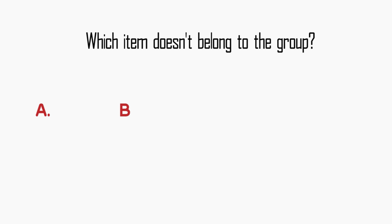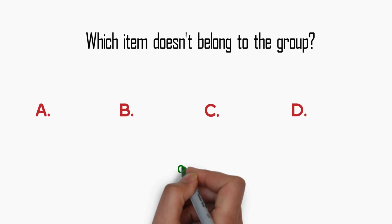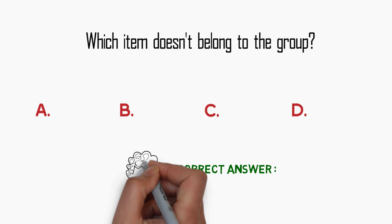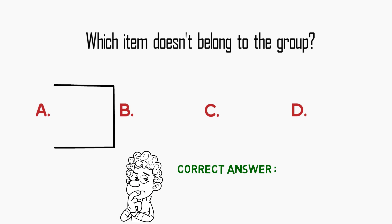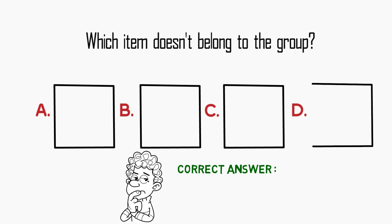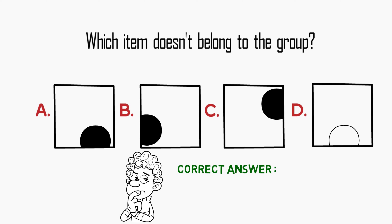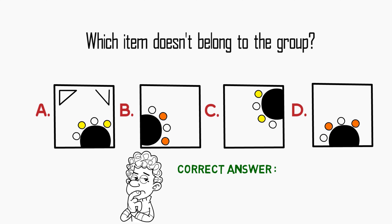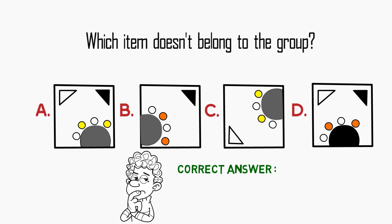There is always a pattern you need to detect to answer these types of questions correctly, and a lot of times there are items designed to confuse you. Let me first walk you through the distractors. You have small circles — there are four in each square — but the small circles do not follow any pattern. There are also triangles; some squares have two triangles and some have one, but there is no pattern there either. The pattern is actually defined by the half-circle, and all half-circles are attached to the corners of the square.